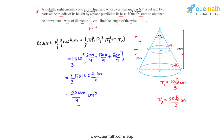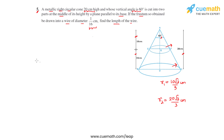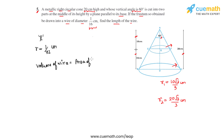The question states that the frustum is drawn into a wire of diameter 1/16 centimeters, and we have to find the length of the wire. The volume of the wire will equal the volume of the frustum. Taking the length of the wire as l, the radius of the wire r = (1/16)/2 = 1/32 centimeters. The volume of the wire equals π·r²·l — that is, the area of the cross-section times the length.